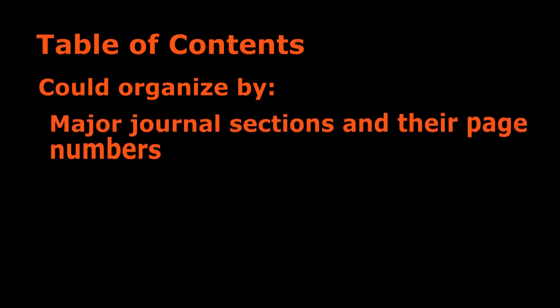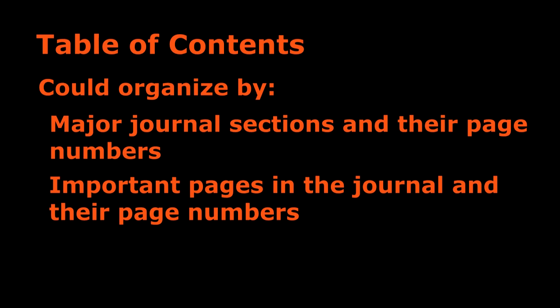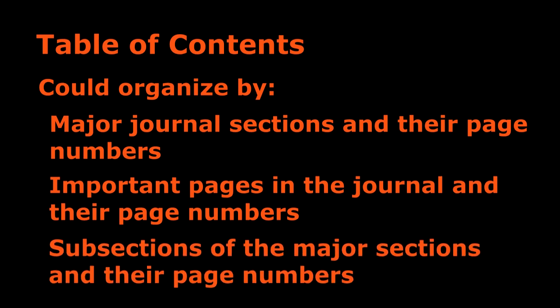Now, we are going to talk about the table of contents. The table of contents should include any major sections you have and page numbers where each section starts. Then it should either include important pages in their main sections with their page numbers, or subsections of the main sections and the page numbers of the subsections. This is just so the judges can see at a glance what each of your major sections contain.